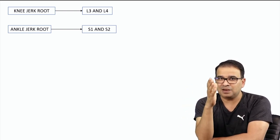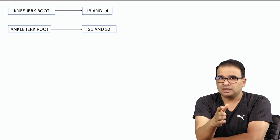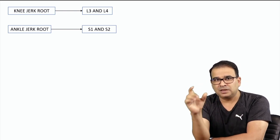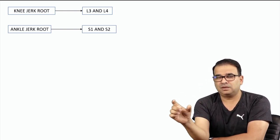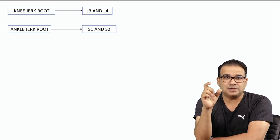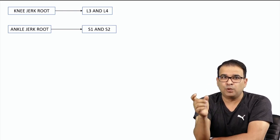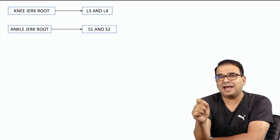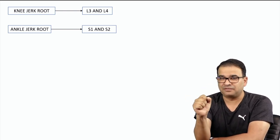To repeat: in conus medullaris syndrome, the ankle jerk is affected but the knee jerk is spared. But in case of cauda equina syndrome, both knee jerk as well as ankle jerk reflexes will be affected.